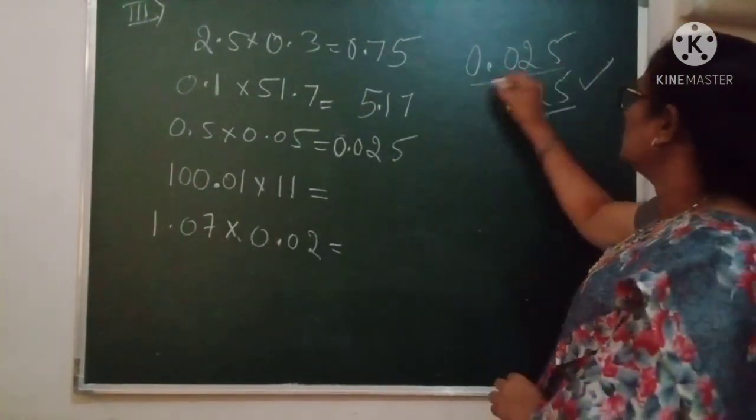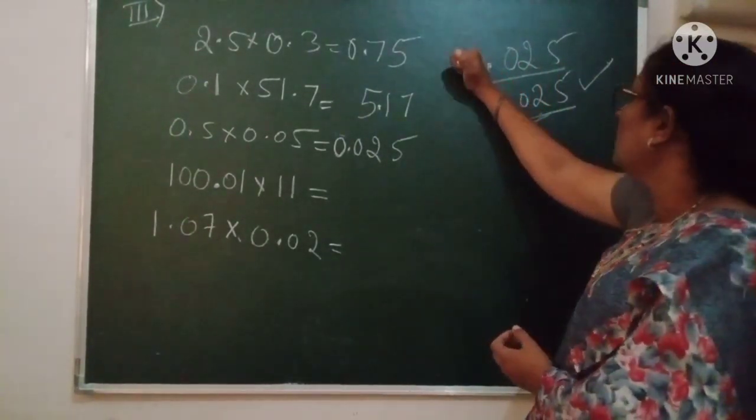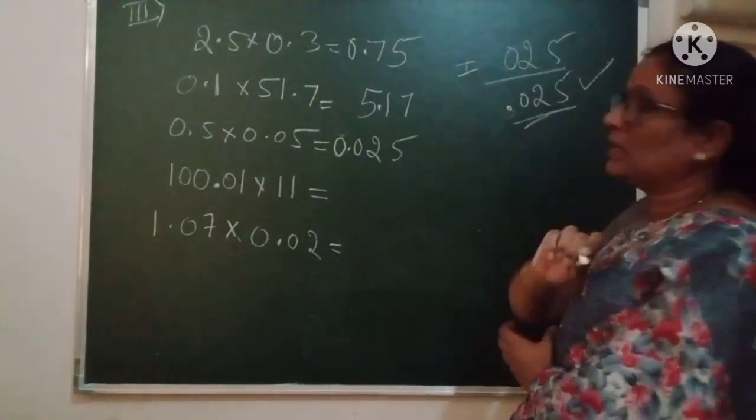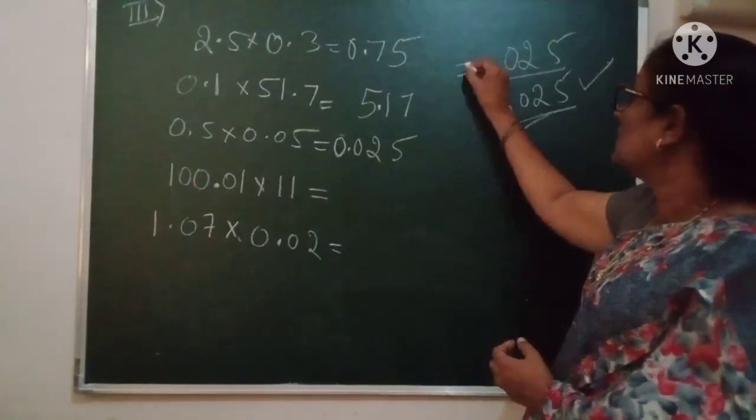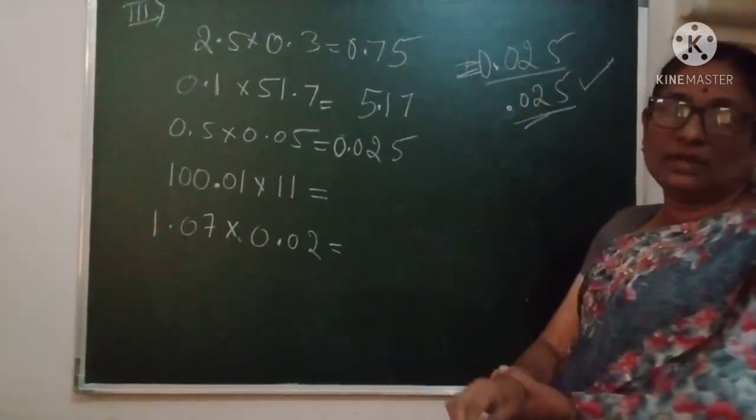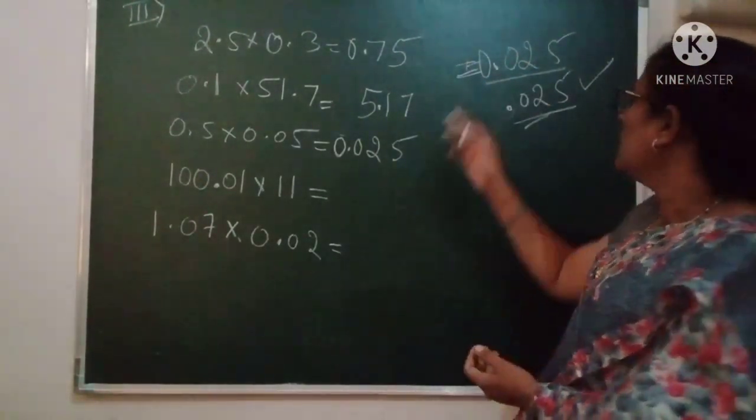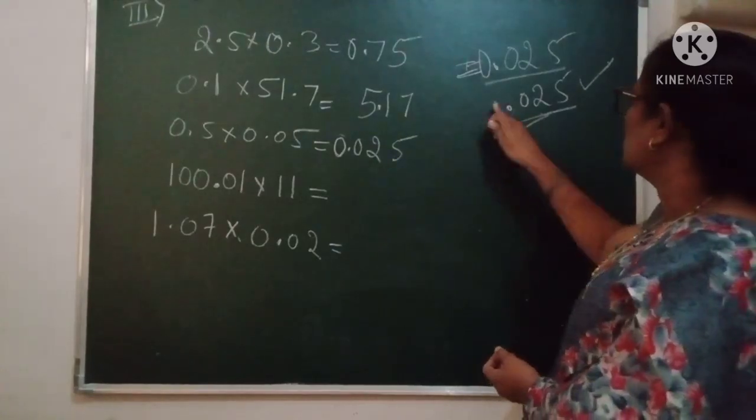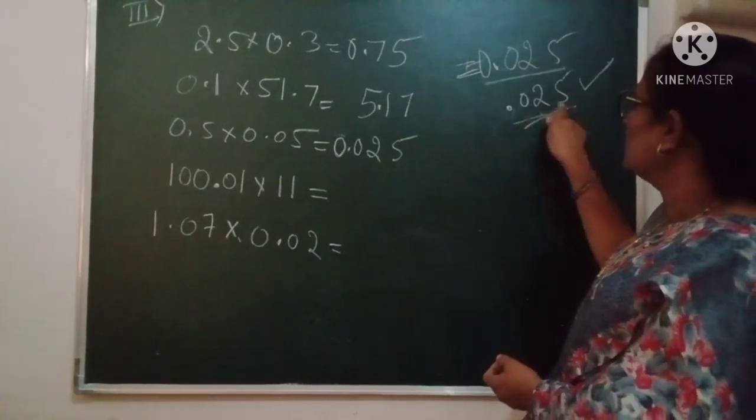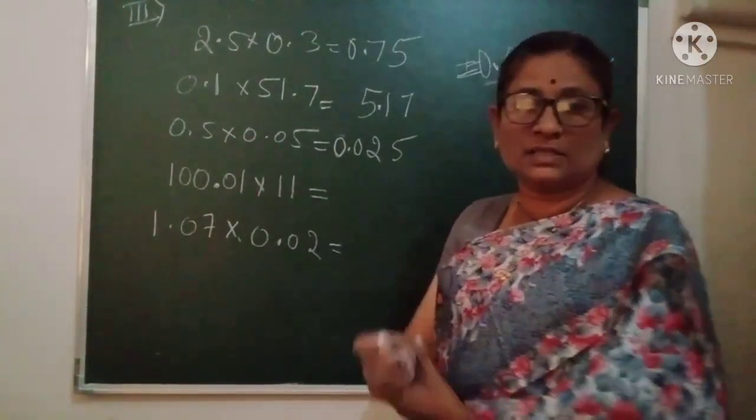Why do we put this 0? While writing, sometimes when we put equals to and all that, this point we can't see clearly. So to avoid that confusion, we put the 0. It makes a good impression. 0.025, this is the agreed way of writing. And this zero is compulsory because we have 3 digits after the decimal point.